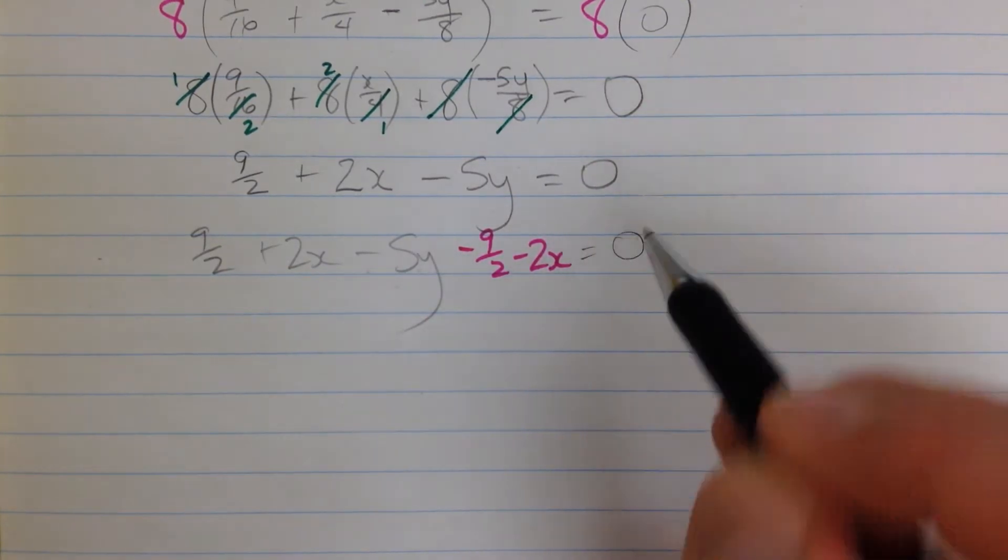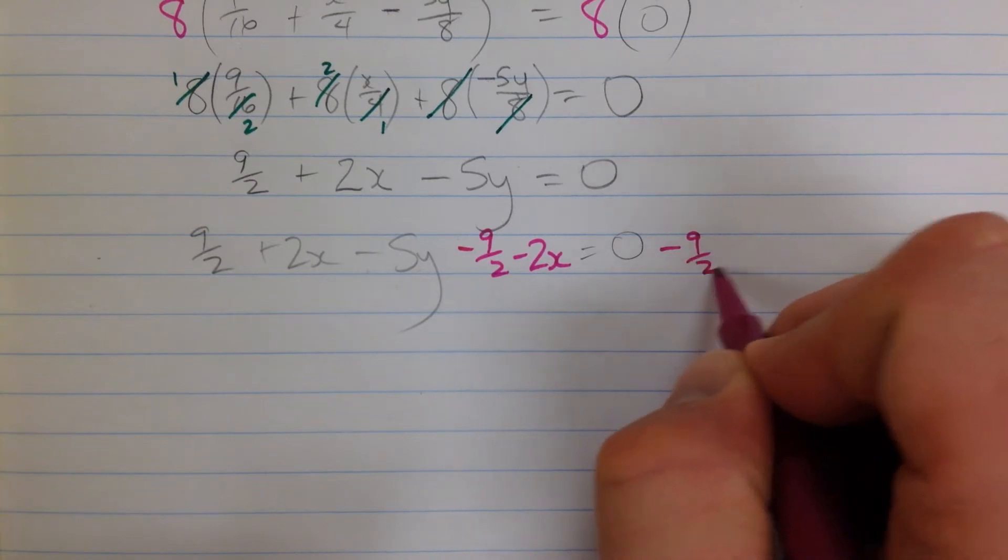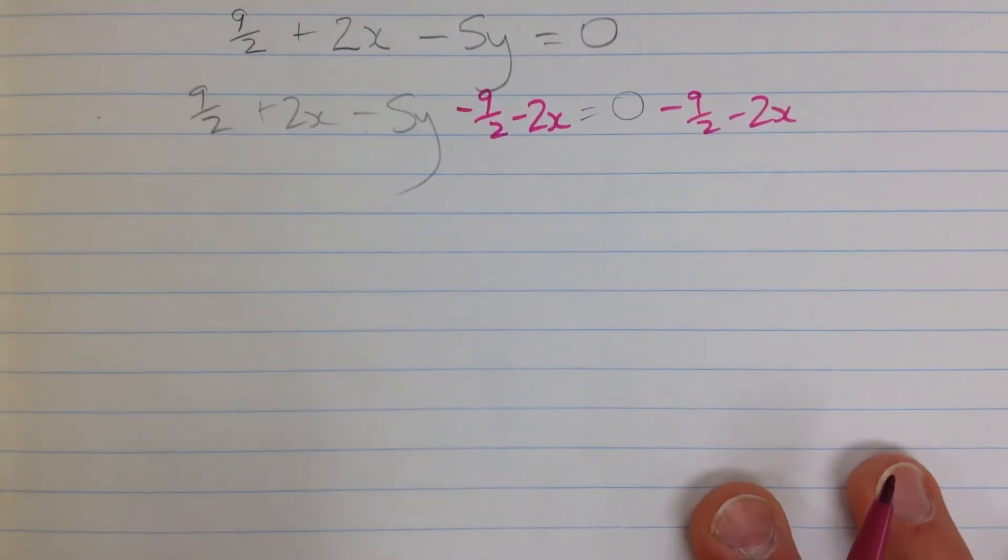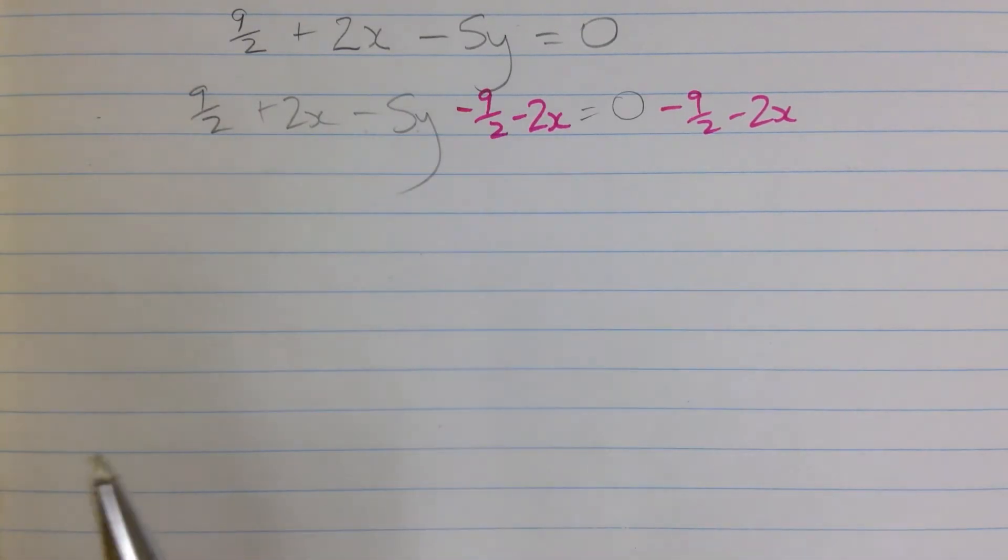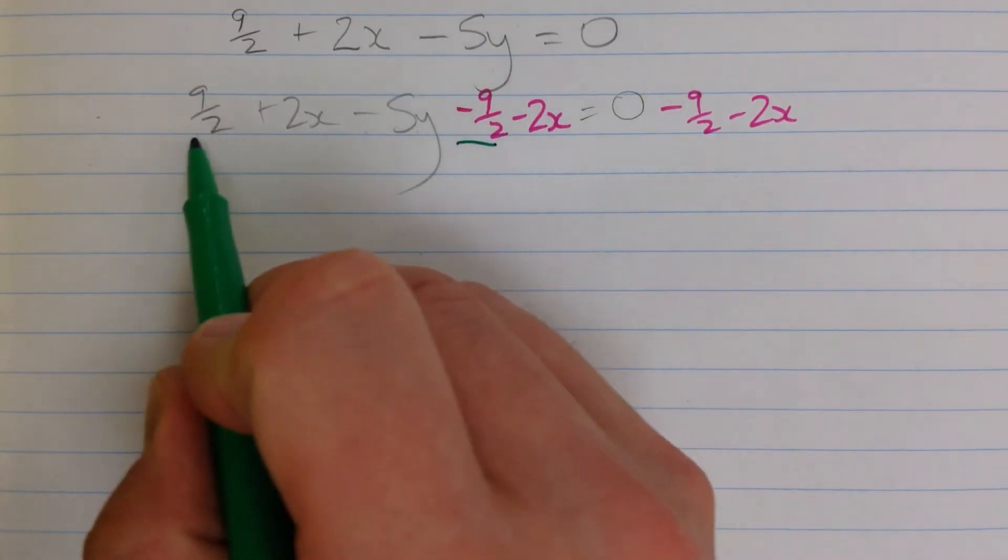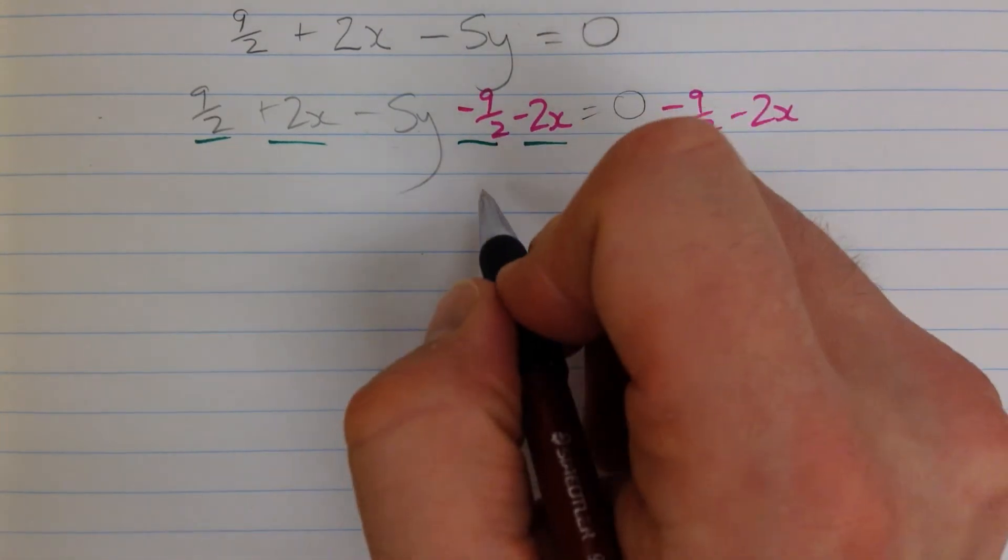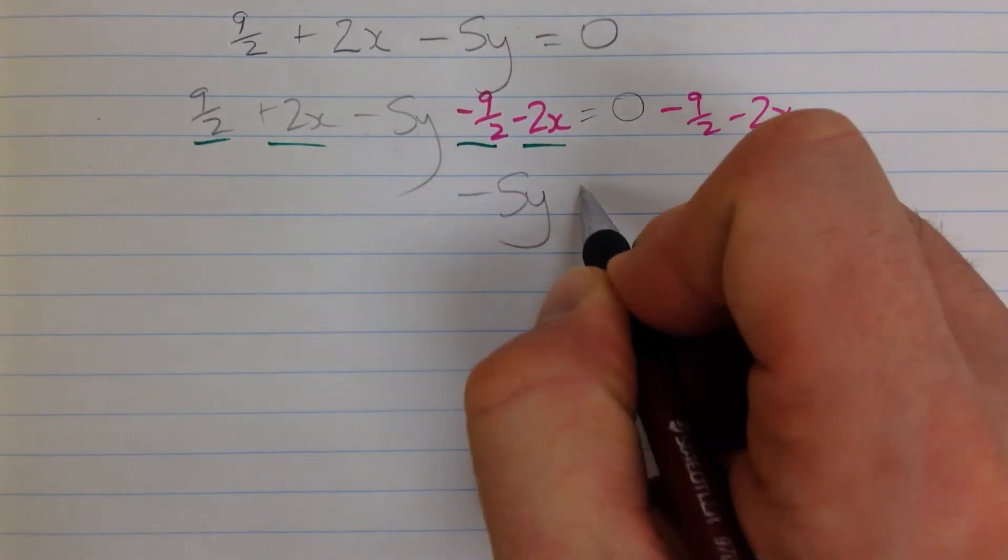Which is 0, minus 9 halves, minus 2x. I've done the same thing to both sides of the equation, so it's still balanced. These things are going to cancel, that's the point. This and this, this and this, are all cancelling out. I'm left with negative 5y equals.